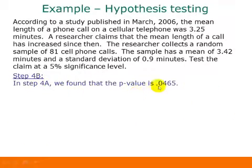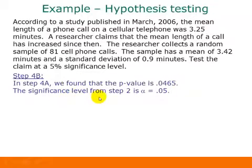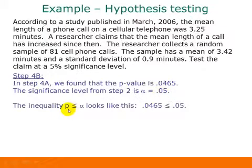In step 4a we found that the p-value was .0465, and the significance level we had in step 2 was .05. This is one reason it's important to write that down in step 2. Now we're going to compare this p-value and the alpha. The inequality we're looking at is p is less than or equal to alpha. Here's our p-value, here's our alpha.